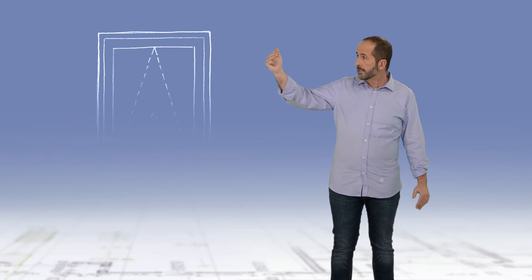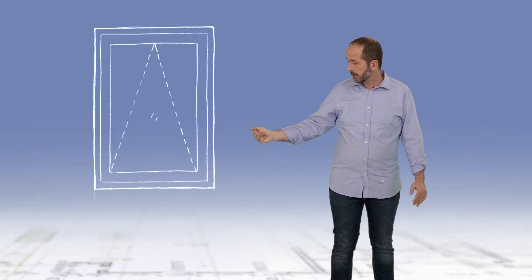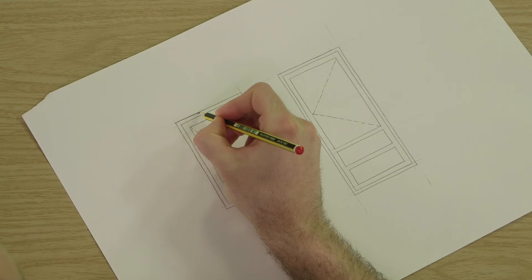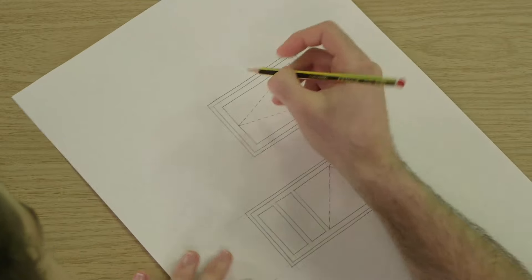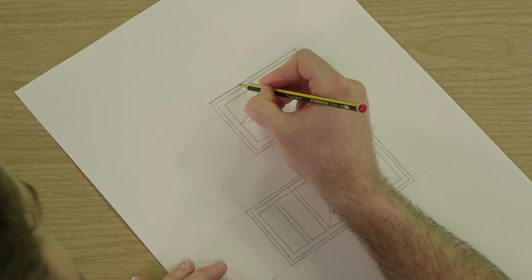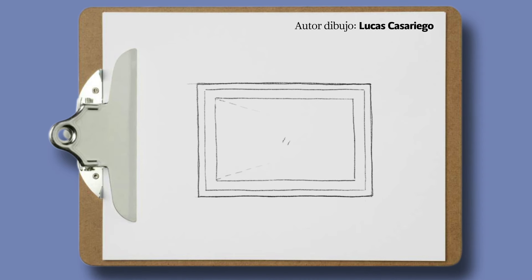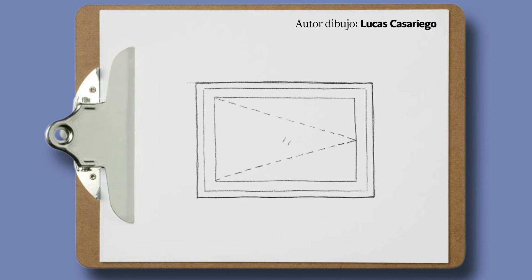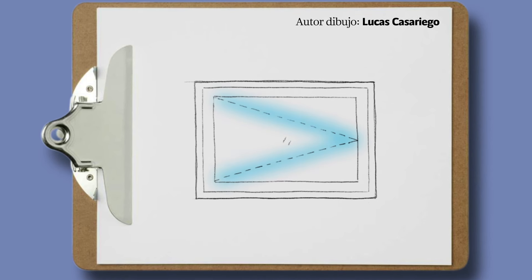En alzado una ventana siempre la dibujaremos con tres líneas a lo largo de todo su marco. Además si nuestra ventana es tanto batiente como abatible, habremos de indicar el sentido de apertura con un triángulo cuyos extremos estarán donde la bisagra y la punta en donde tocaría estar el tirador.